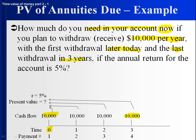The annual return — so they're annual — so you're also going to have withdrawals in one year and in two years. If you're going to withdraw money, you're going to receive it. So you get $10,000, $10,000, and $10,000. The annual return for the account is 5%.